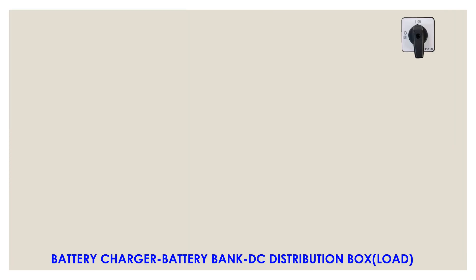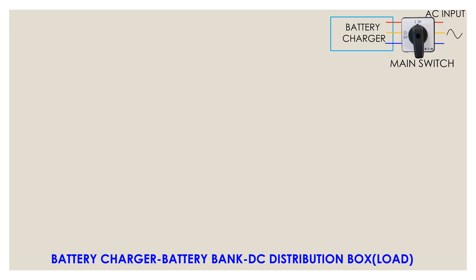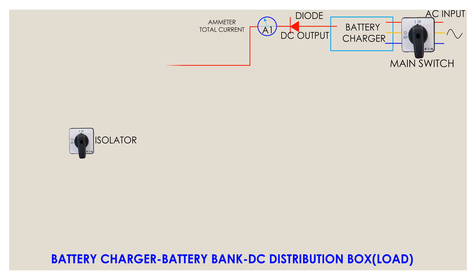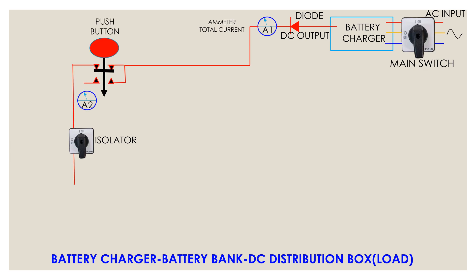Please watch the diagram for better understanding about the charging process and loading of DC power. DC power is given to the battery charger through an MN switch. The ammeter A1 is connected in series with the load to indicate total load current. This push button when pressed shows the charging current of the battery by ammeter A2.